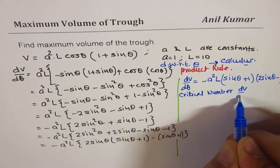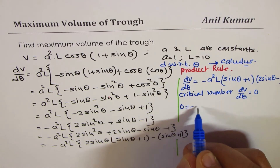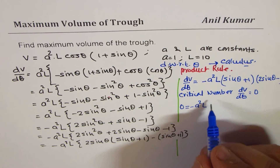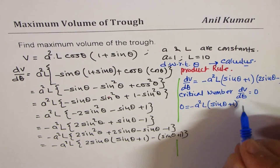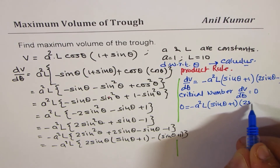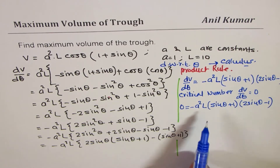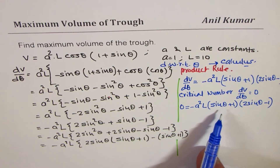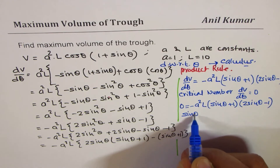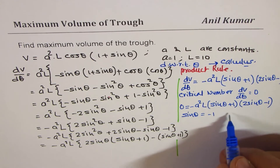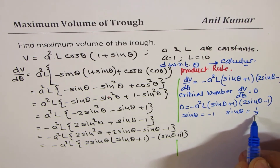For a critical number, set dV/dθ equals 0: minus a squared L times (sin theta plus 1)(2 sin theta minus 1) equals 0. This gives sin theta equals minus 1, or sin theta equals 1/2.